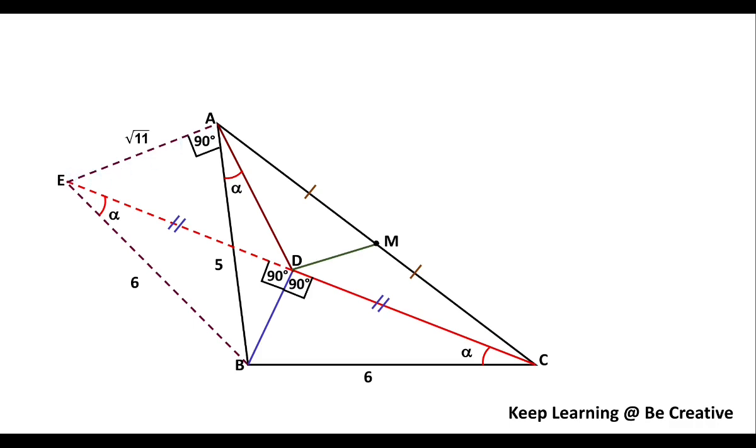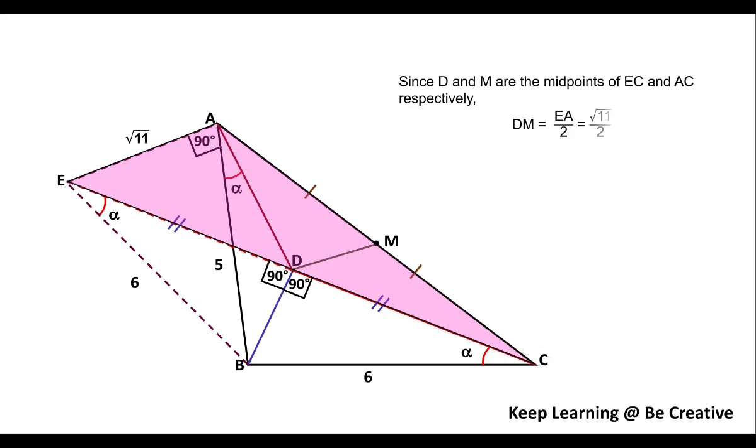Let us mark this back in the triangle. So here we have EA as root 11. Now what is left? We have to find the length of DM. We can very easily see in this triangle EAC, as we have initially thought of, that D and M are the midpoints of EC and AC. So by midpoint theorem we can very easily say that DM will be half of EA, that is this length, and this length we have already calculated as root 11.